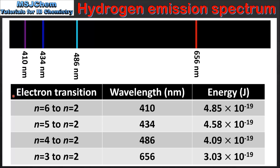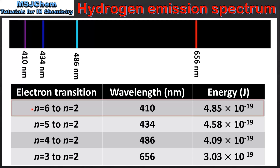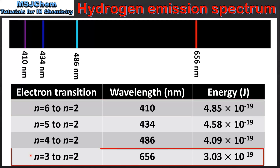In this table we can see the wavelength of light and energy emitted for each electron transition in the visible region. From the table we can see that the electron transition from n equals 6 to n equals 2 emits the greatest amount of energy, and the electron transition from n equals 3 to n equals 2 emits the least amount of energy.